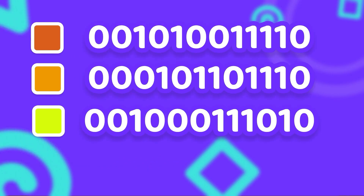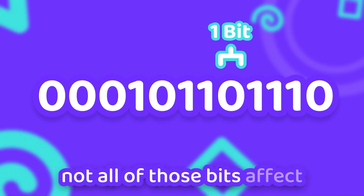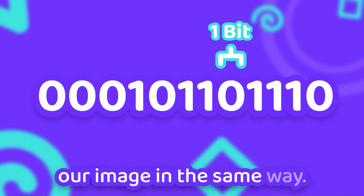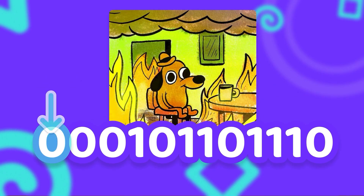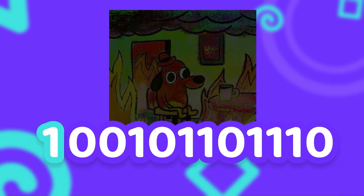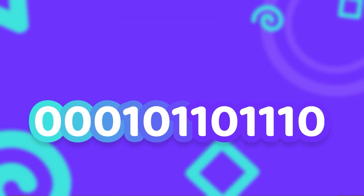Every pixel of our image is stored as binary data. This might look a little scary, but don't worry — all I want to show you is that not all of those bits affect our image in the same way. Let's take a look at what would happen if we changed the bits on the far left to 1 for every single pixel of our image. And we can see that's clearly not our original image anymore — you can clearly see something weird is going on in this image.